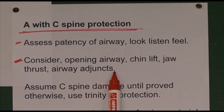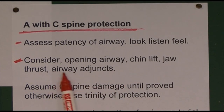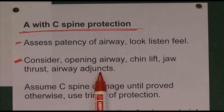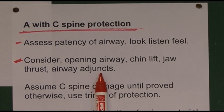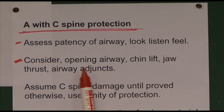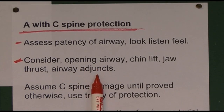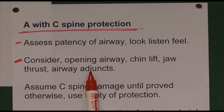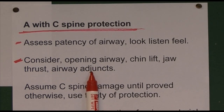We can also use airway adjuncts such as nasopharyngeal or oropharyngeal airways, or laryngeal masks. But if we want to protect the airway from aspiration, the only airway adjunct that will do that is endotracheal intubation with an inflatable cuff — that will give us a patent airway and airway protection.